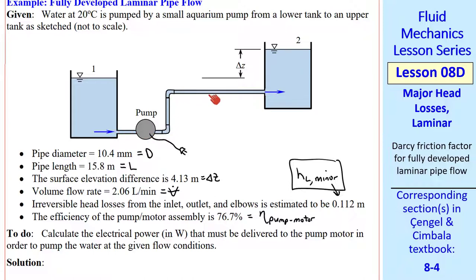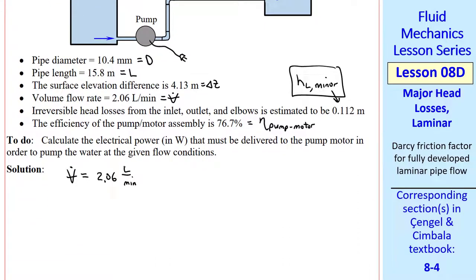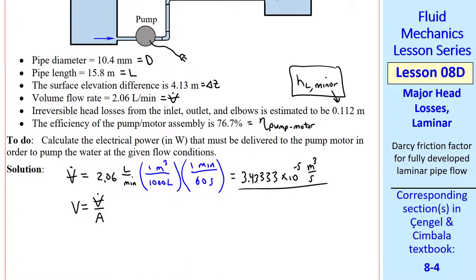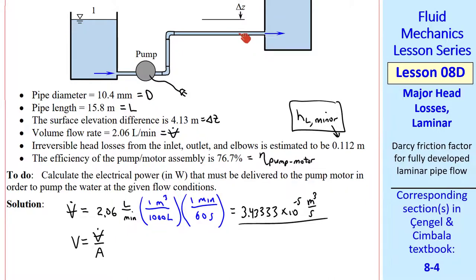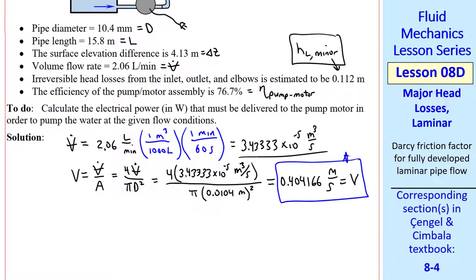This is very typical of the type of problems that we'll be able to solve now. Before I pick a control volume, I want to get some of these variables into standard SI units. To help with our algebra later, V dot is 2.06 liters per minute. I multiply by a unity conversion ratio: a meter cubed is 1000 liters, and one minute is 60 seconds. This gives us 3.43333 times 10 to the minus 5 meter cubed per second. I also want to calculate average speed through the pipe, which by the way is the same through the whole pipe because we have one pipe diameter. V is equal to V dot over A, or 4V dot over pi D squared. I plug in my volume flow rate and the pipe diameter to get the average speed.